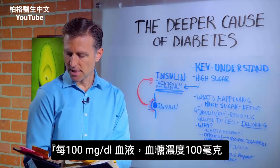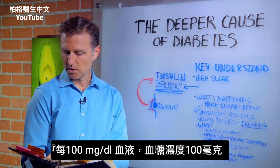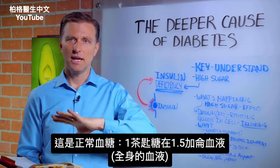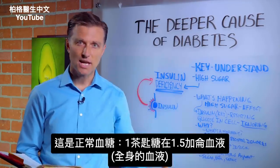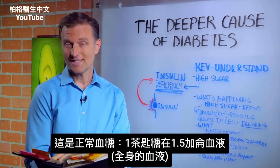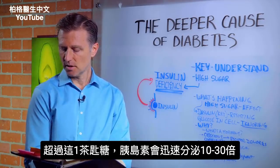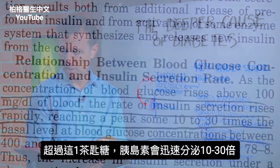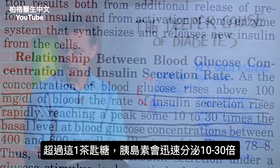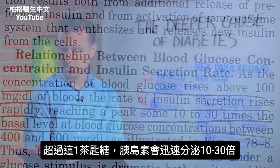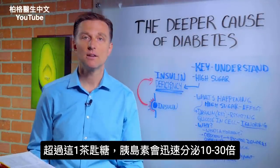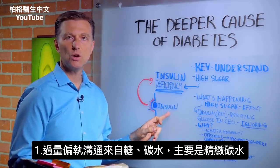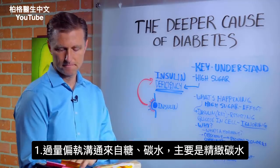As the concentration of blood glucose rises above 100 milligrams per deciliter of blood — that's normal blood sugar, like one teaspoon of sugar in a gallon and a half of blood, your entire body of blood — as blood glucose rises above that, so more than one teaspoon, the rate of insulin secretion rises rapidly, reaching peaks some 10 to 30 times the baseline level. That's a tremendous spike. So number one, what will cause obsessive insulin communication is glucose, sugar, or carbs — mainly refined carbs.